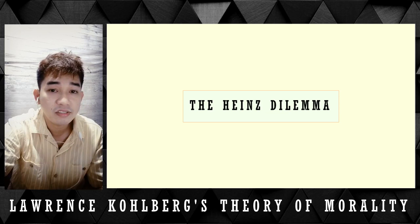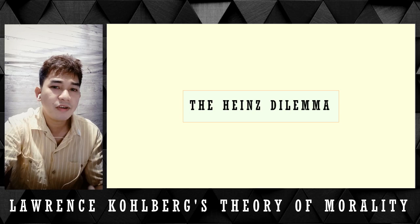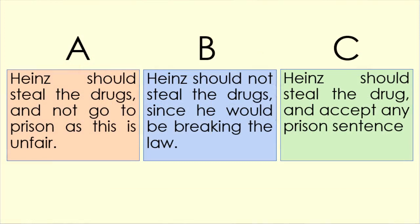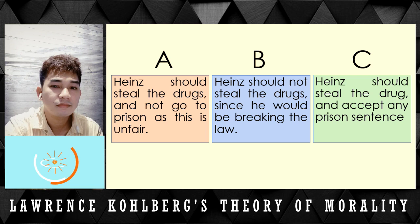Going back to the Heinz Dilemma, we are now going to assess where you fall on the levels and stages of Kohlberg's moral development and find out how advanced your moral thinking is. There are 3 options — choose one. Option A: Heinz should steal the drugs and not go to prison as this is unfair. Option B: Heinz should not steal the drugs since he would be breaking the law. Option C: Heinz should steal the drug and accept any prison sentence.